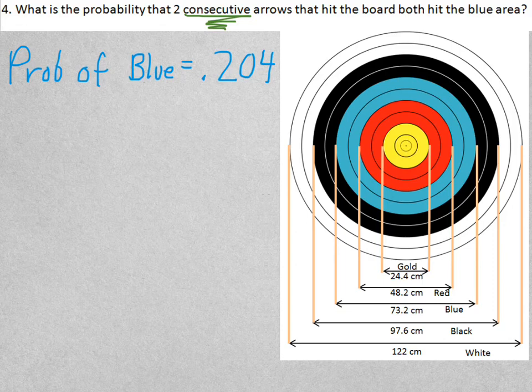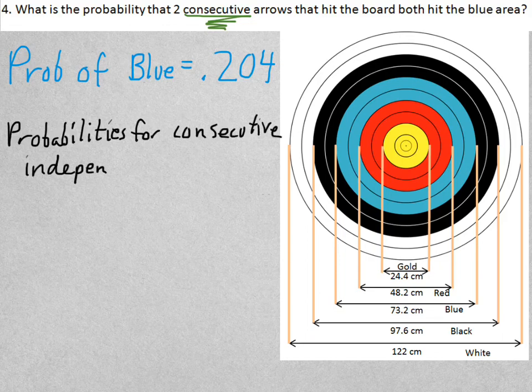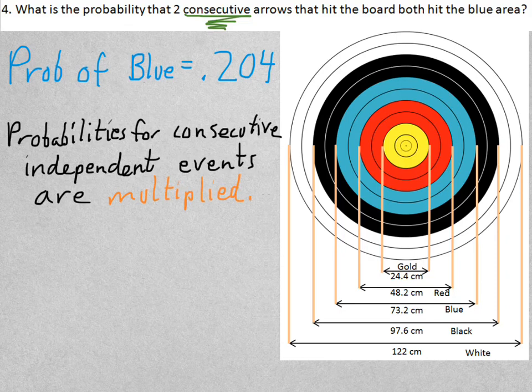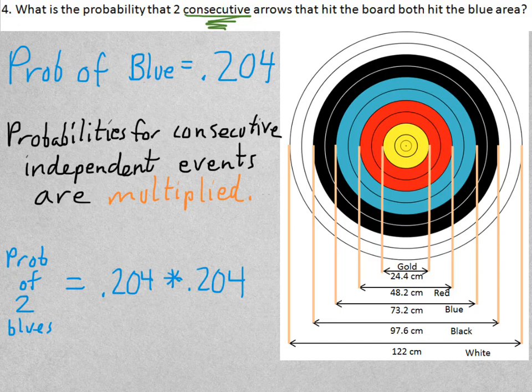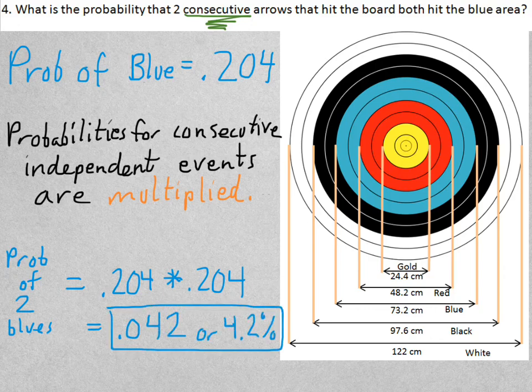Now, in order to find the probability for two consecutive arrows hitting the board, you need to know that the probabilities for consecutive independent events are multiplied. That's a basic probability fact you probably learned in middle school. You just may or may not remember it. So if I want to find the probability of two blues, I would multiply .204 times itself. That gives me .042, or 4.2%. Notice that the probability went down. Does that make sense? Well, yeah. It's harder to hit the blue area twice, or it's harder to hit the blue area twice than it is to hit it once. So the probability should be less.